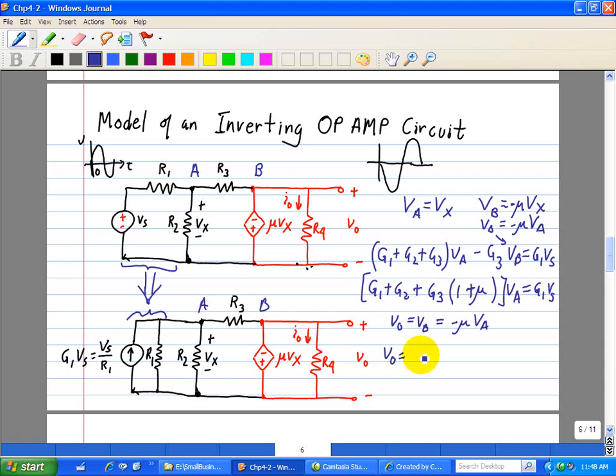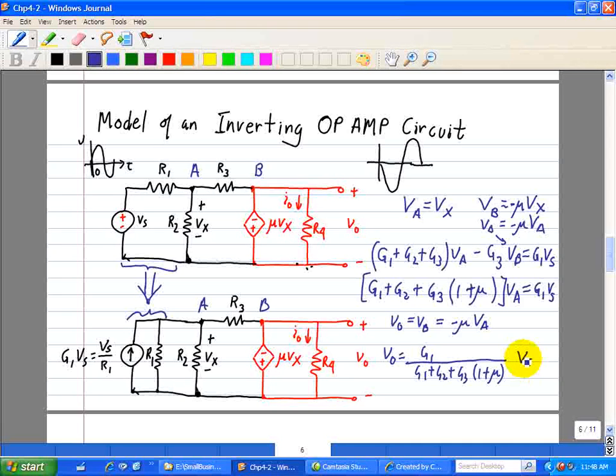And that Va here, when we solve for Va, V0 is equal to G1 all over G1 plus G2 plus G3 1 plus mu. And this gets multiplied by Vs as our input.